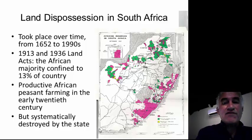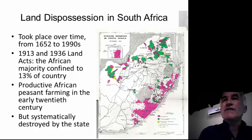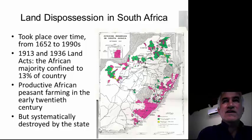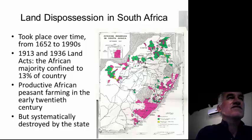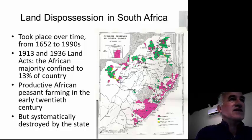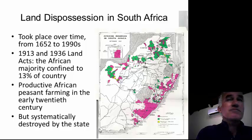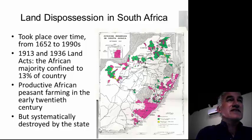This is a map of the former Bantustans — the 13%. Dispossession took place over a long time; an easy point of reference is 1652 when Jan van Riebeeck arrived. Of course we focus a lot on the 1913 and 1936 Land Acts, where by law the African majority was confined to these so-called reserves, or later Bantustans — a mere 13% of the land. That is where Africans were allowed to hold land rights.